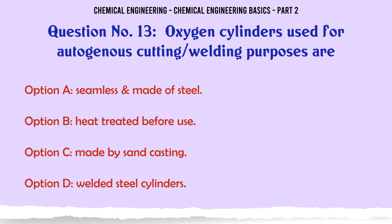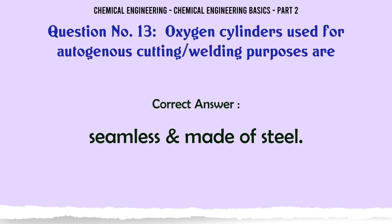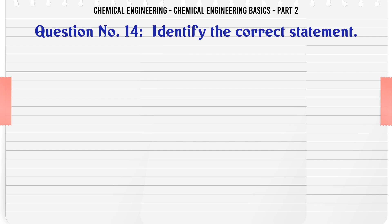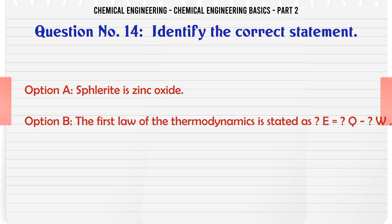Oxygen cylinders used for autogenous cutting and welding purposes are: a) seamless, made of steel, b) heat treated before use, c) made by sand casting, d) welded steel cylinders. The correct answer is: seamless, made of steel.